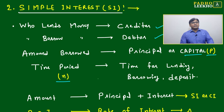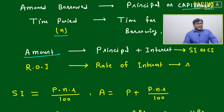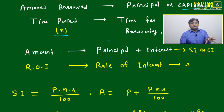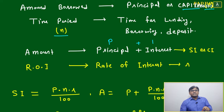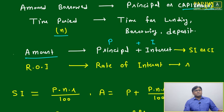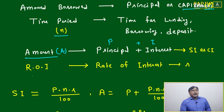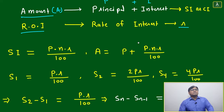The time period N represents the time for lending, borrowing, or deposit. Amount — generally called the matured amount — is what you get after depositing a principal P and earning interest over a period of time under simple interest or compound interest. The total of principal plus interest is simply called the amount. Rate of interest, or return on investment, is denoted by R.